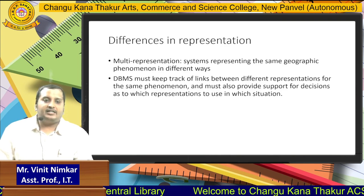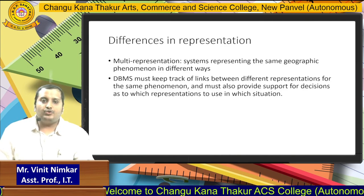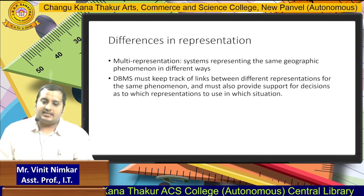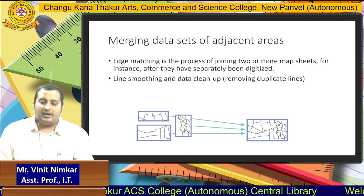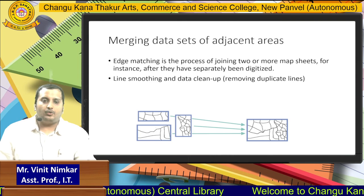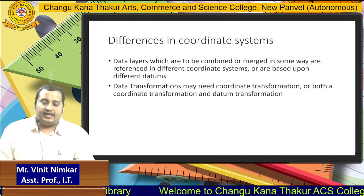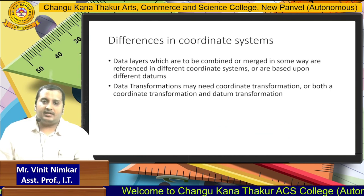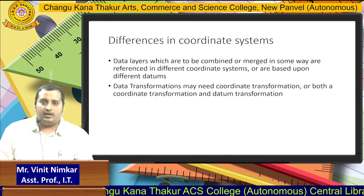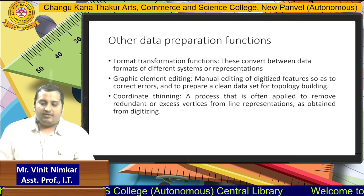Differences in representation can also occur. For example, if the location of hospitals is represented by a red cross in the original data source, but you have used a triangle to represent hospitals in your map, there can be differences in representation. Merging of adjacent areas: if there are multiple areas you want to combine into a single area, the merging of adjacent areas option is available. There can also be differences in coordinate systems — a data source might use a different coordinate system from the one we are using.